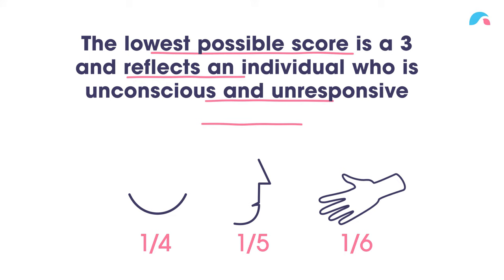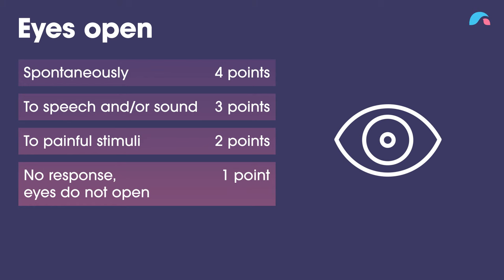Let's look at measuring the person's eye opening. Do they open their eyes spontaneously like normal? Four points. Do they only open their eyes when you speak to them or in response to noises? Three points. Do they only open their eyes to a physical or painful stimulus? Two points. Do they not open their eyes to anything? One point.